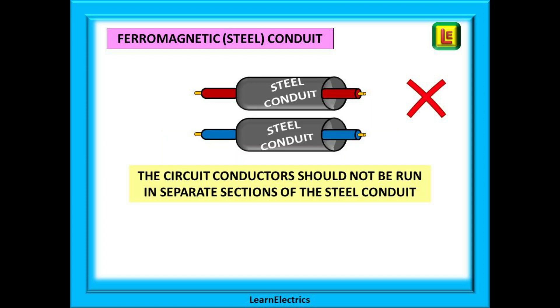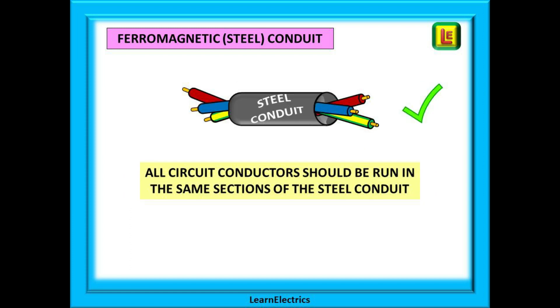For the same reasons as before we should not put the line and neutral conductors in separate sections or runs of steel conduit. When using a ferromagnetic or steel conduit and trunking, all the conductors for a circuit must be within the same enclosure, the same section. If we do this we will reduce or eliminate any electromagnetic effects in that part of the installation.